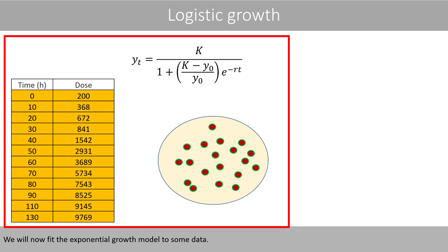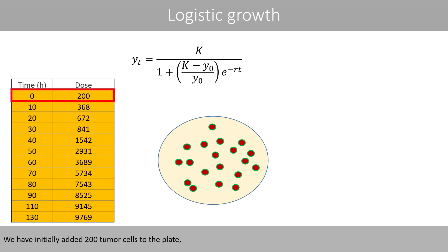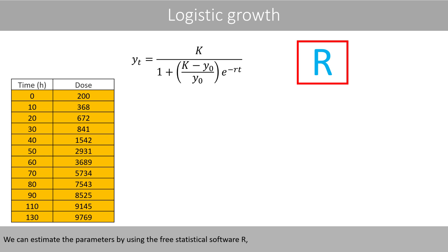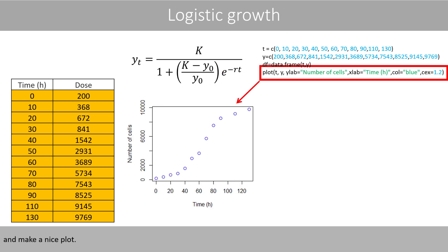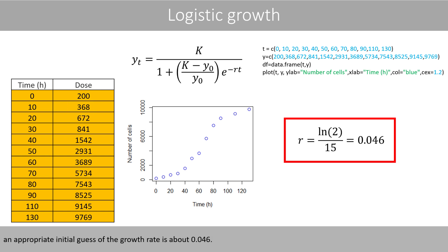We'll now fit the exponential growth model to some data. Suppose that we would grow tumor cells on a culture plate. We have initially added 200 tumor cells to the plate, and measured the number of cells over time like this. We can estimate the parameters by using the free statistical software R, where we plug in the data and make a nice plot. Based on this plot, it seems like a reasonable initial estimate of K should be 10,000. Since we know that we started with 200 cells, we do not need to estimate y-zero. We instead keep this as a fixed parameter. Since it takes about 15 hours for the population to double in the beginning where we have exponential growth, an appropriate initial guess of the growth rate is about 0.046.